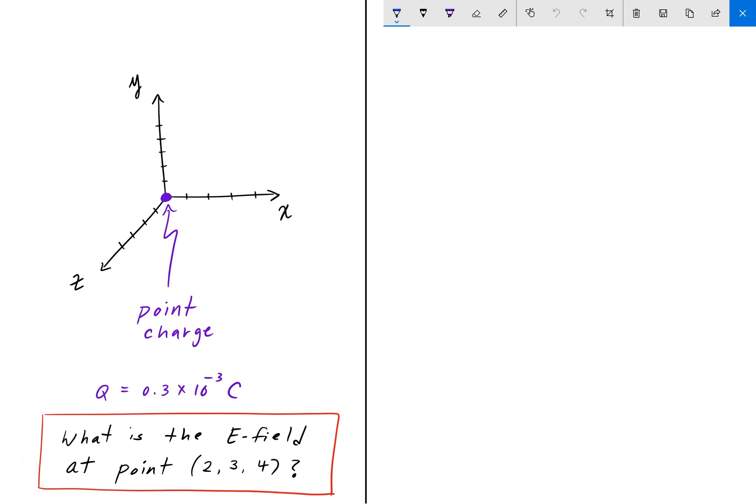And this point charge has a charge of 0.3 times 10 to the negative 3 coulombs. And the question is, what is the E field at the point (2, 3, 4)? So as always, pause the video, give it a shot, and we'll go over the answer in a bit.